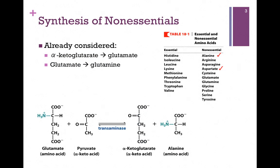Next, we look at the synthesis of glutamate. Its precursor is alpha-ketoglutarate — again, it's a transaminase reaction. For the synthesis of glutamine, which we looked at in lecture, it's catalyzed by the enzyme glutamine synthetase. We take glutamate and transfer an amine group to the side chain to form glutamine. So now we can check off these two amino acids on our list.